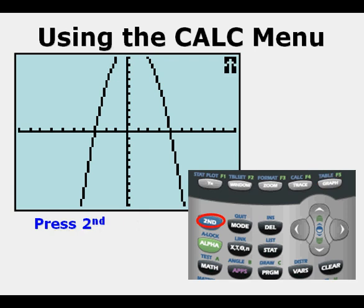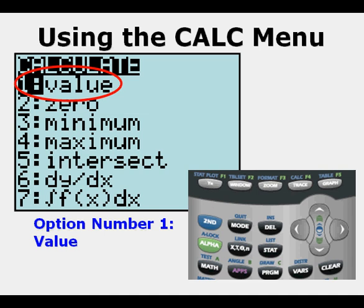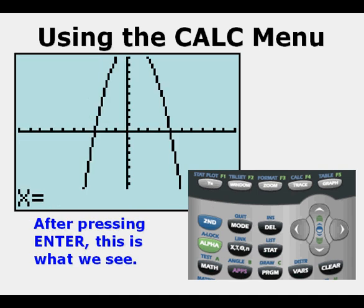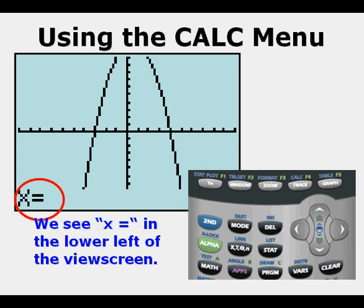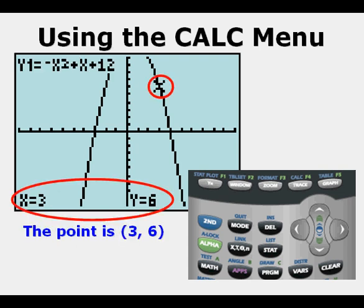Now we are going to go to the calc menu. Press second, then press trace that accesses the calc menu. Here is the calc menu. Option number one is value. After pressing enter to access the value option, this is what we see. We see x equals in the lower left of the view screen. We enter the number three. Press enter. We can see the coordinate marked on the graph of the function and the x value of three and the y value of six circled below at the bottom of the view screen.